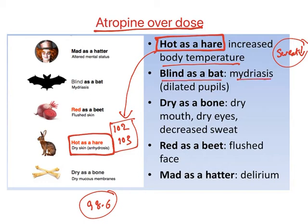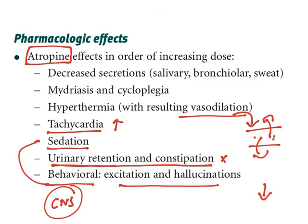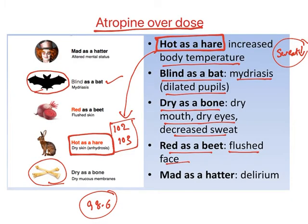'Blind as a bat' — because of mydriasis and dilated pupils; bats cannot see well. 'Dry as a bone' — dry mouth, dry eyes, and decreased sweat all result in dryness. 'Red as a beet' — hyperthermia results in vasodilation; when blood vessels are dilated, redness appears. The beetroot appears very red in color, so flushed skin appears like this.